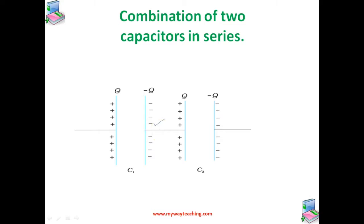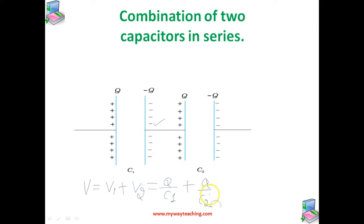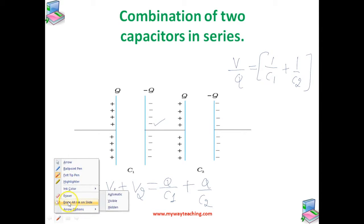The total potential drop V across the combination is the sum of the potential drops V1 and V2 across C1 and C2. So the total potential difference is V1 plus V2, which is given by Q/C1 plus Q/C2. We can write V/Q is equal to 1/C1 plus 1/C2. This proof clearly extends for any number of capacitors connected in series.